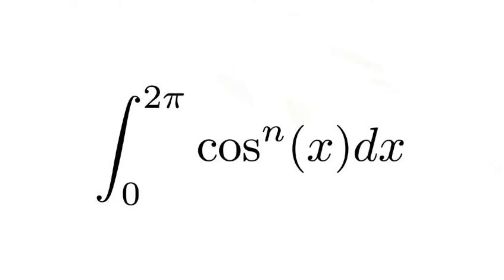Hello, and welcome to Hawk Math. Today we're going to be solving this integral: the integral from 0 to 2 pi of cosine to the nth power of x dx, where specifically in this case, n is an even integer.